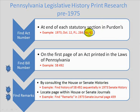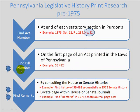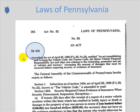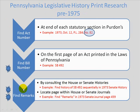So for an example, a citation giving act number 82 passed in the year 1973 — we'll go to the second step: translate that act number into a bill number, which you do by looking on the first page of an act printed in the Laws of Pennsylvania. So I would go to the 1973 version of the Laws of Pennsylvania, find act number 82, and look at the first page of act 82. I will see the bill number — either a House or a Senate bill — in this case, Senate Bill 492.